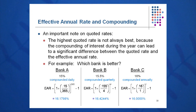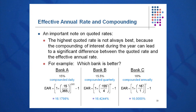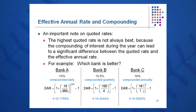Here's a good example. Where should I invest my money? Bank A pays 15% compounded daily, bank B pays 15.5% compounded quarterly, and bank C pays 16% compounded annually. Some people might run to bank C since 16% looks highest, but that's not correct. Bank A actually pays an EAR of 16.2%, bank B's 15.5% compounded quarterly translates to an EAR of 16.4%, and bank C is simply 16%. So the right choice is bank B.